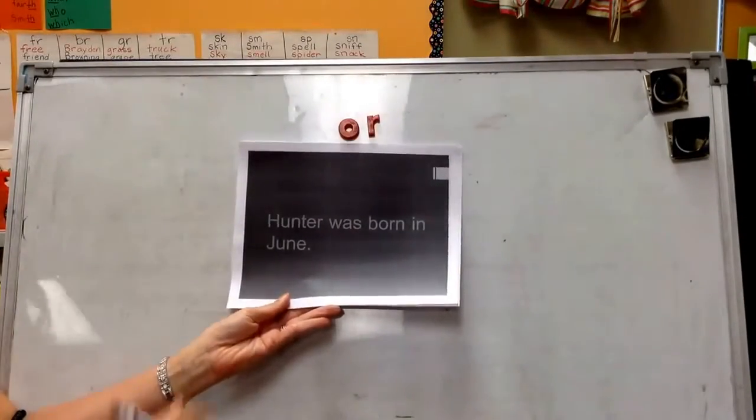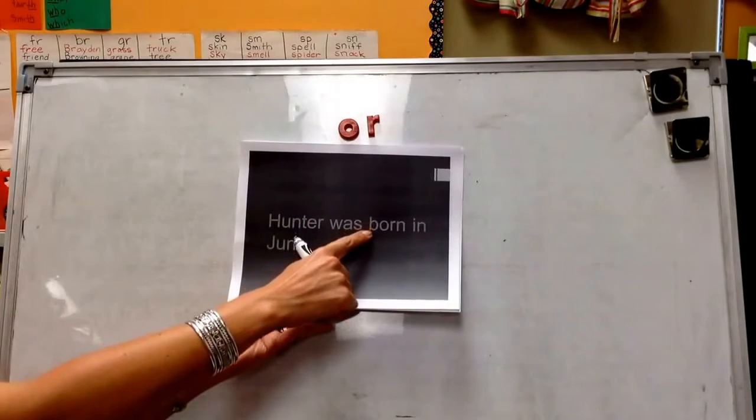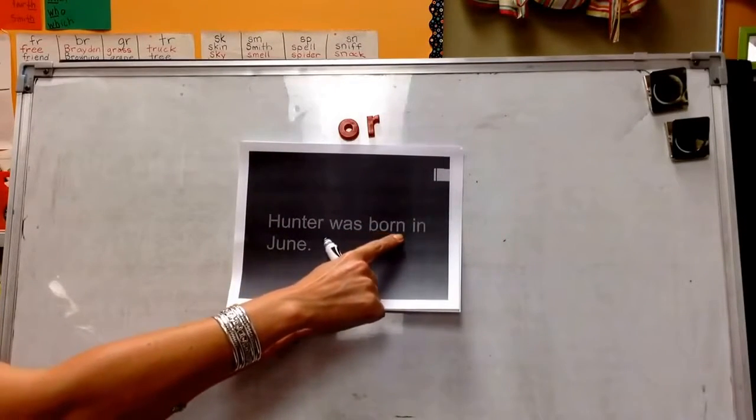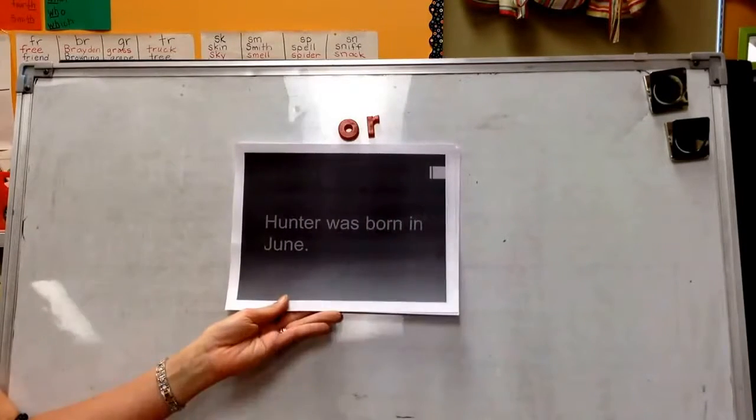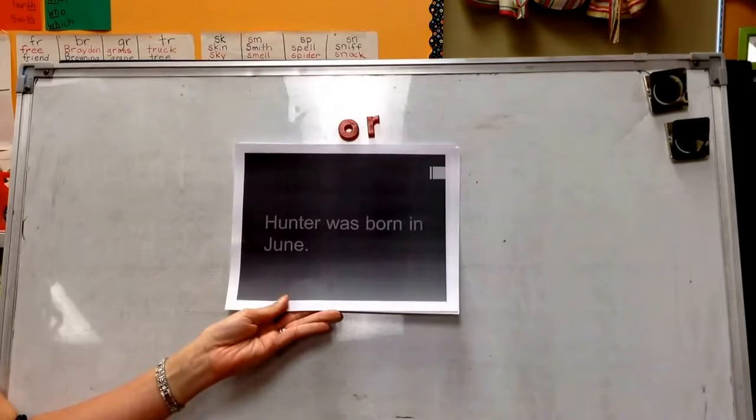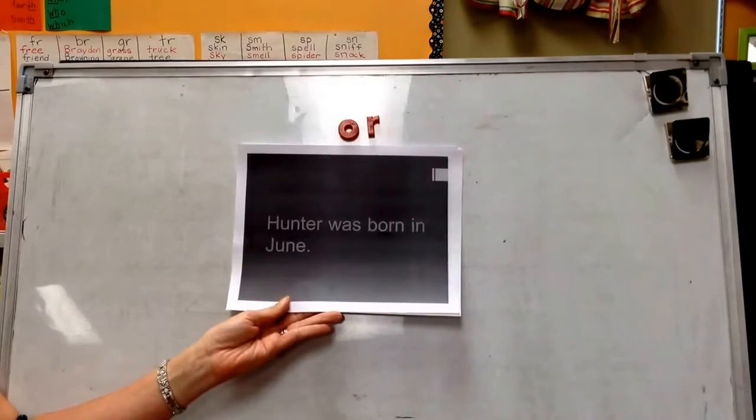Here's my next sentence. Hunter was b-orn, born. So I see O-R and I read it as ORn. Hunter was born in June.